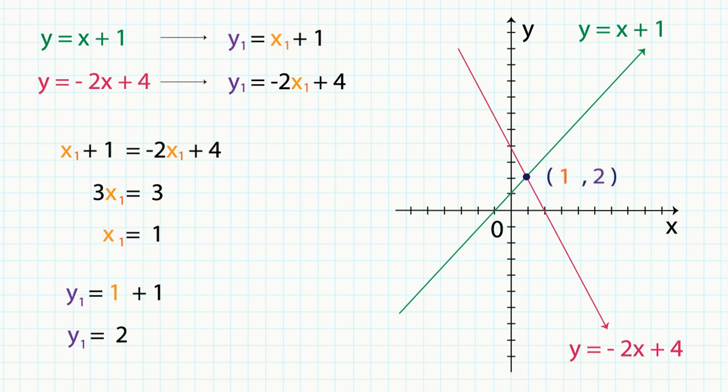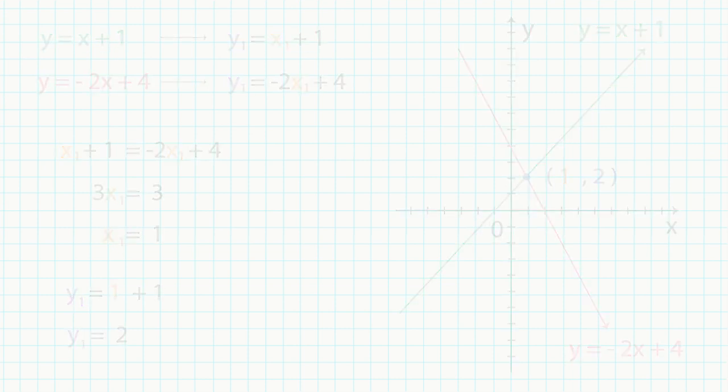Now, what if we have two linear functions in general form? We can, of course, convert the general form to gradient intercept form, but let's use a different method to find the intersection.